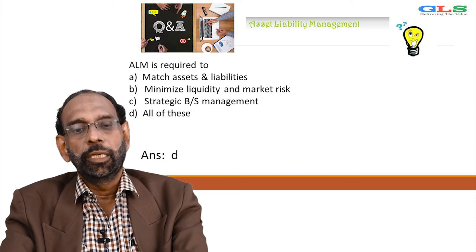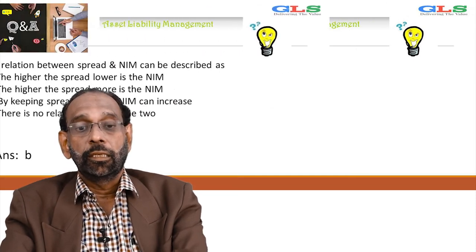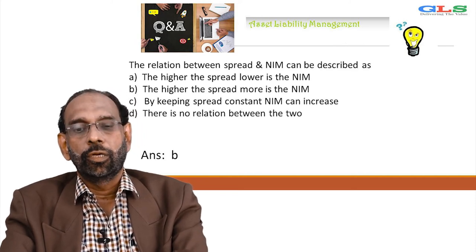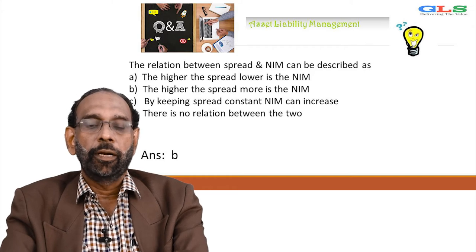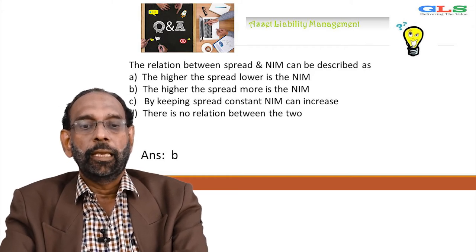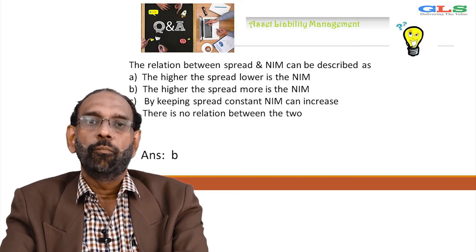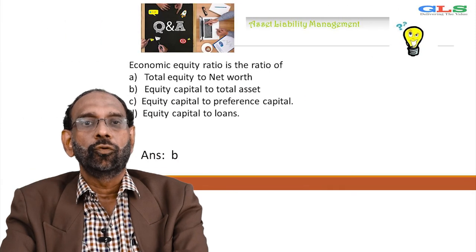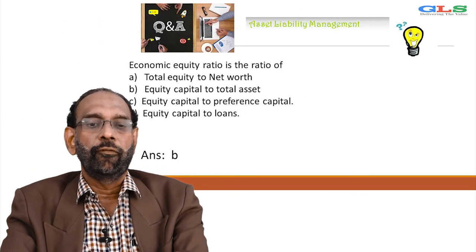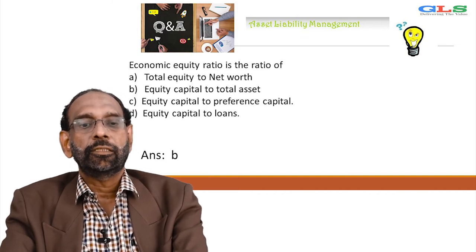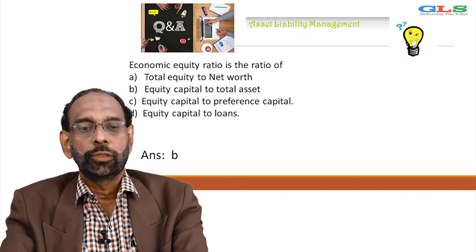ALM is about matching assets and liabilities, minimizing liquidity and market risk, and strategic balance sheet management. The relation between spread and NIM: A: higher the spread, lower is NIM; B: higher the spread, more is NIM; C: by keeping spread constant, NIM can increase; D: there is no relation between the two. The answer is B — higher the spread, more is NIM. Economic equity ratio is the ratio of equity capital to total assets. The answer is B.